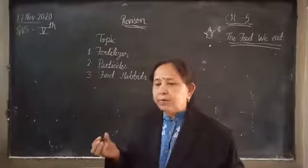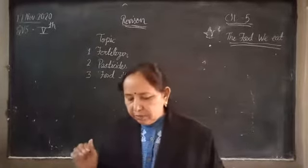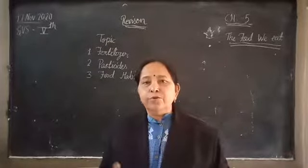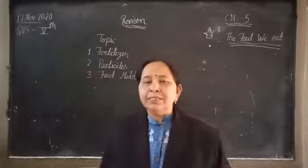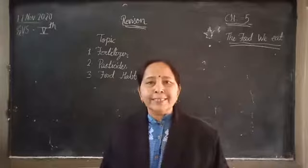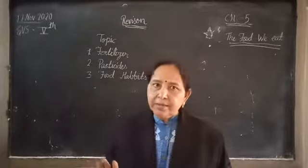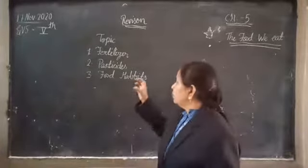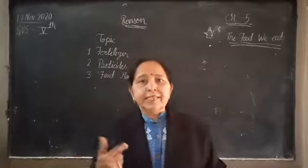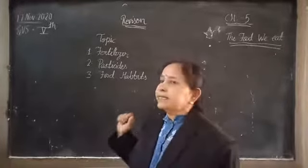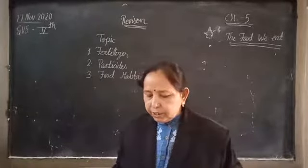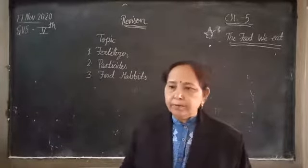The waste material from animals and plants that are used to produce material — this is waste material from animals and plants. Animals' waste material and plants that are used to produce material.